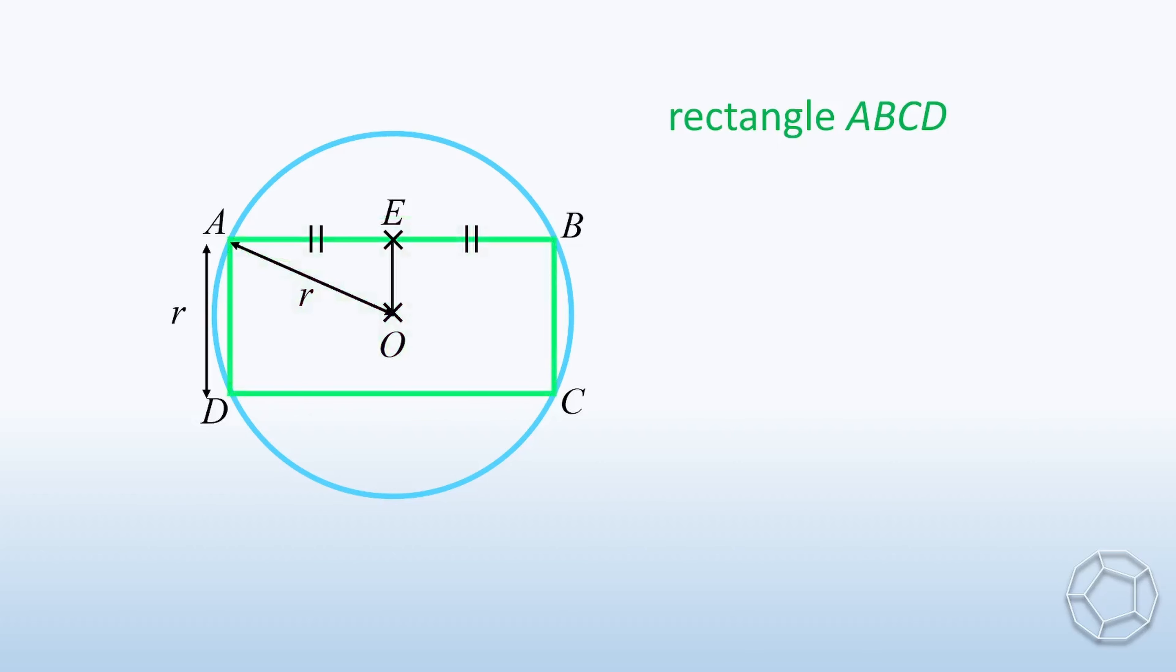Now we construct OE. Because O is the center of the rectangle and E is the midpoint of side AB, OE is perpendicular to AB. Moreover, by properties of rectangle, OE is equal to 1 over 2 times the height AD, which is equal to r over 2.